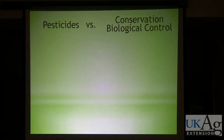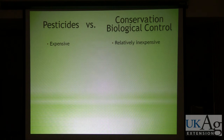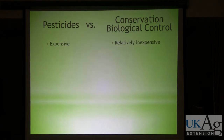This idea is termed conservation biological control — conserving and supporting the natural enemies that are already in the environment. Comparing that approach to pesticide usage: with pesticides, they can be rather expensive, especially when you consider the chemical itself as well as the labor involved, particularly if multiple applications are required. Conservation biological control is relatively inexpensive; there can be installation and maintenance costs, but overall it's a relatively inexpensive approach.